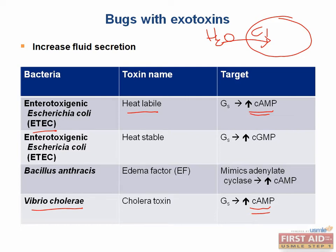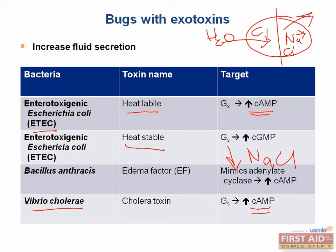The heat-stable toxin of ETEC activates cyclic GMP production, not cyclic AMP like the heat-labile form. This causes decreased sodium chloride resorption from the gut. Since water follows salt, it ultimately causes watery diarrhea — there is a decrease in salt and water reabsorption, resulting in an increased water load in the intestine.